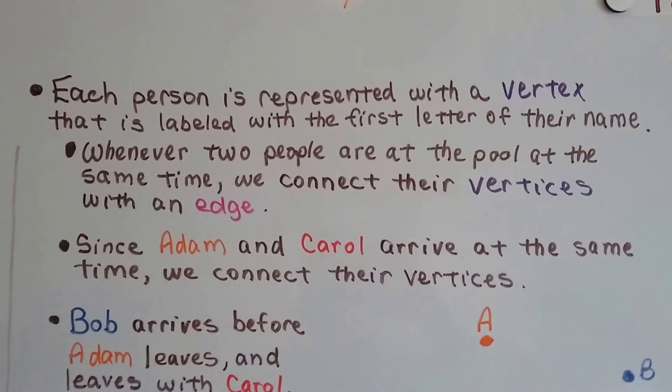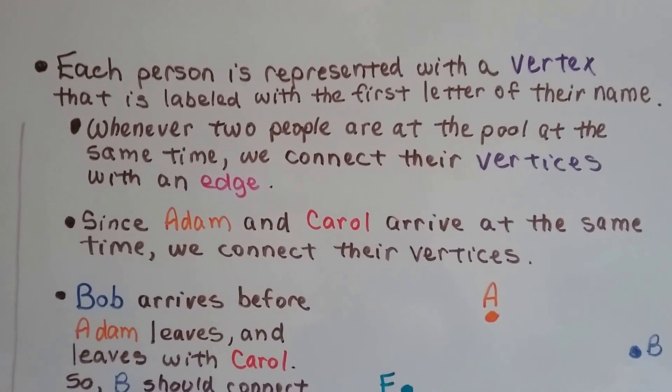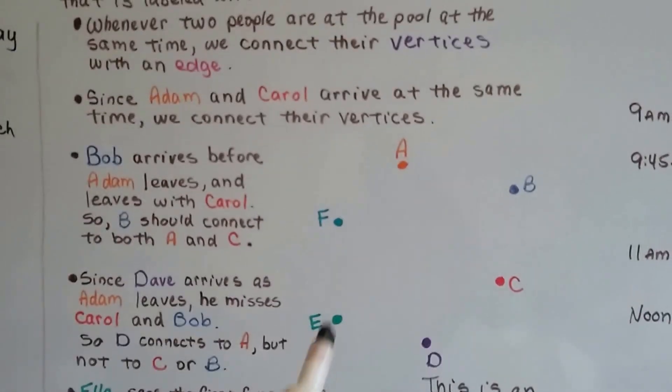Whenever two people are at the pool at the same time, we connect their vertices with an edge. So we've got A, B, C, D, E, and F.